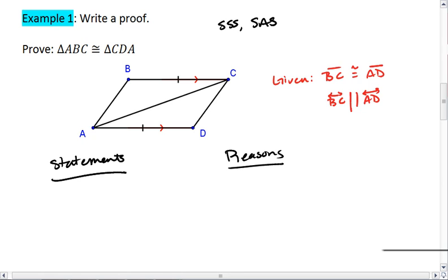Looking at my diagram, let's sketch an idea. I already have one side congruent, and that's my BC AD side. I also know that the shared side, AC, is congruent.